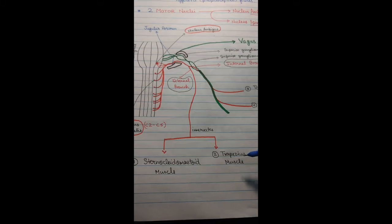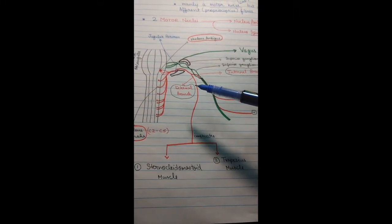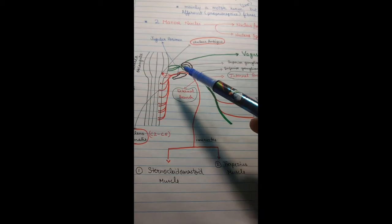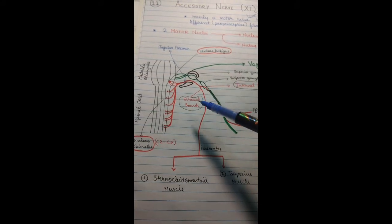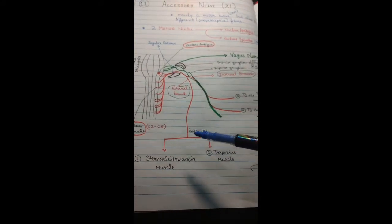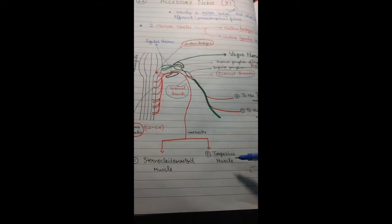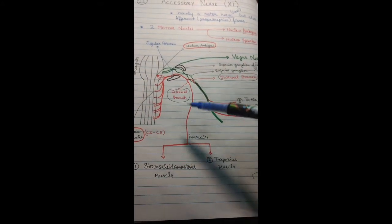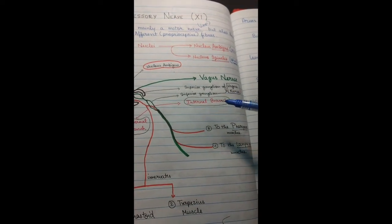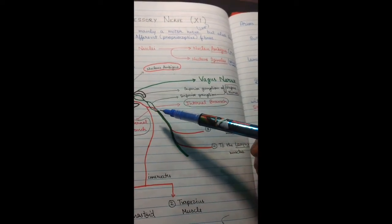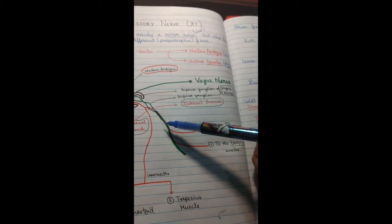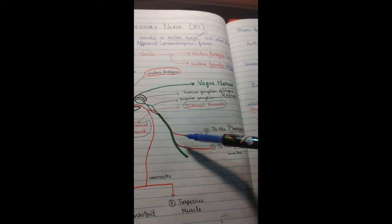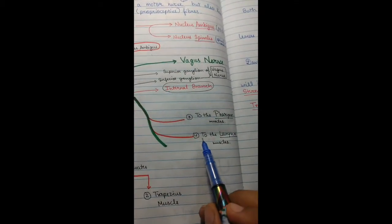The internal branch joins the vagus nerve at the inferior ganglion of the vagus nerve. The external branch goes downward and innervates the sternocleidomastoid muscle and the trapezius muscle. The internal branch continues as the vagus nerve and gives branches to innervate the pharynx muscles and the larynx muscles.